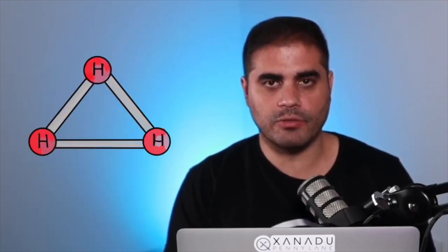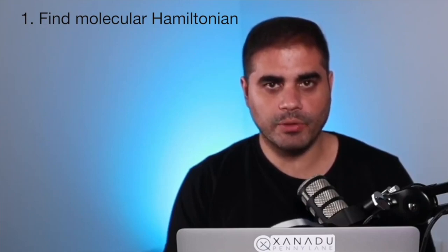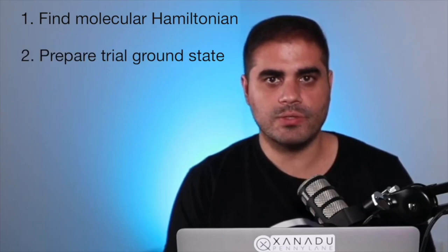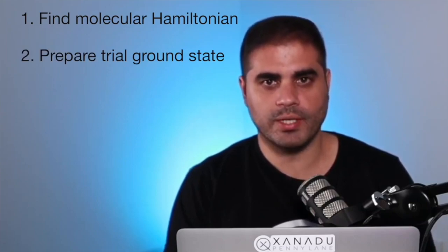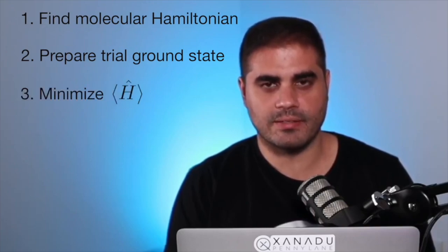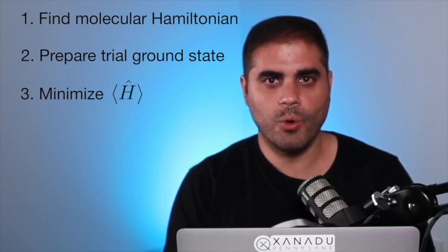VQE is also useful in areas outside quantum chemistry. For example, portfolio optimization problems in finance can be formulated in terms of Hamiltonians, and the optimal portfolio can be found using VQE as well. Today, we will focus on quantum chemistry applications of VQE. In particular, we are going to use it to find the ground state of an H3 molecule. We will do this by following three steps. The first one is to calculate what the Hamiltonian for the H3 molecule is. The second is to prepare a candidate ground state using an educated guess. In physics, that is known as an ansatz. The third one is by running through all of our guesses, we will minimize the expectation value of the Hamiltonian. The state that minimizes its expectation value turns out to be the ground state.